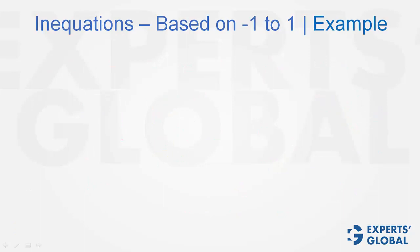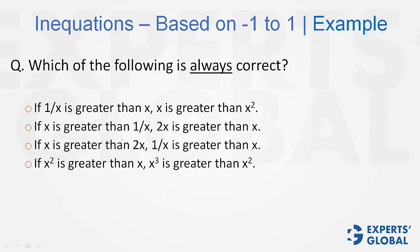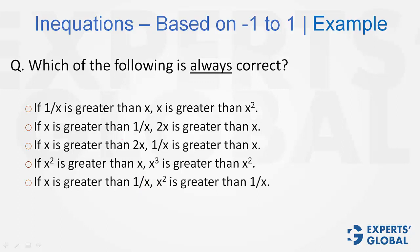Now let's apply this learning on an example. You may want to pause the video and try these yourself. In these 'always correct' questions, the right approach is to find an exception and eliminate the answer choice; when you cannot find an exception, you have the right answer. Let's try proving option A incorrect: 1/x is greater than x, but we want x to NOT be greater than x squared. For x = −2, 1/(−2) is a smaller negative value and therefore greater than x, but x would not be greater than x squared because x is negative and x squared is positive. So option A can be eliminated.